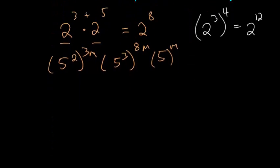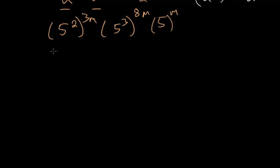So we can rewrite our expression using that rule. So we'll have 5 to the 2 times 3m, which is 6m. Here we'll have 5 to the 3 times 8m, or 24m. I'll multiply by 5 to the m.